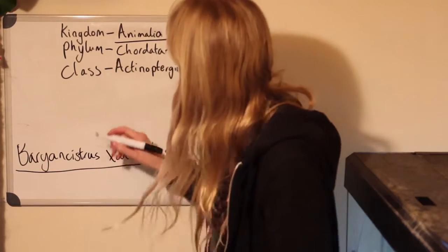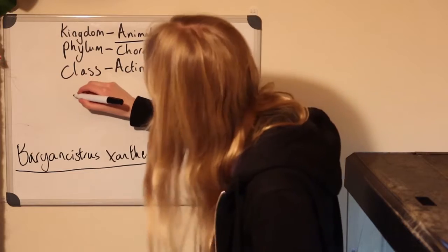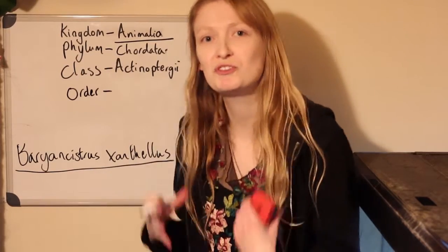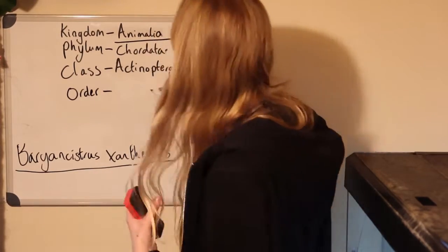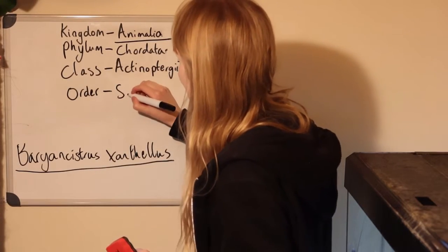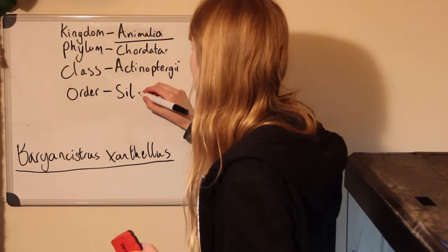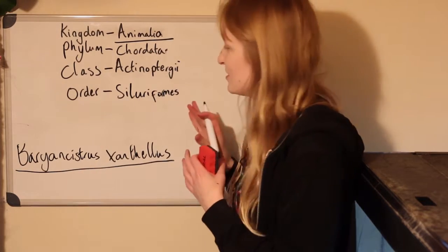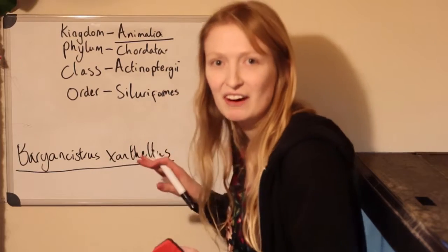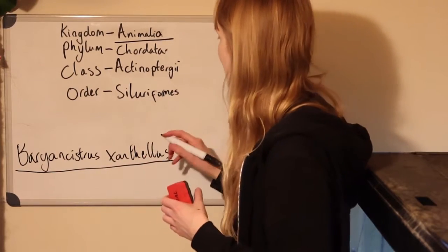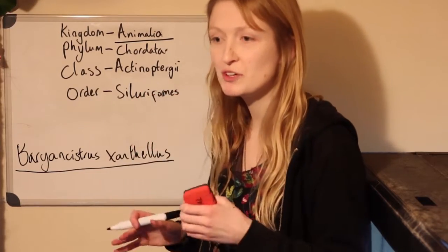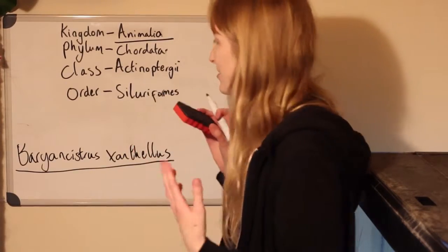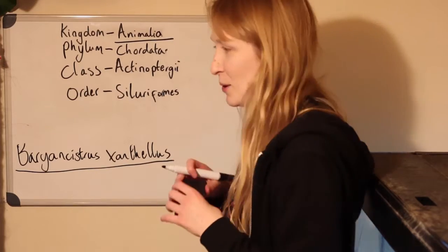Below class we've got order, and this is where we're really getting precise into smaller and smaller categories of organisms. This is the one that a lot of people get very confused about. This is the Siluriformes — these are the catfishes. All your Loricariids, Lorcarid plecos — they are catfishes. There are set morphological features that many catfishes share, and one of them is that catfishes don't have scales, and plecos don't either. I've done videos about that.